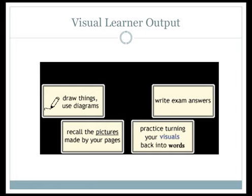For a visual learner to perform well on an exam, a number of methods are preferred. If possible, they can write exam answers out and turn their symbols and pictures back into words — for example, on an essay exam. To quickly recall information, they can remember visuals drawn on notes and also use diagrams in their answers if possible.